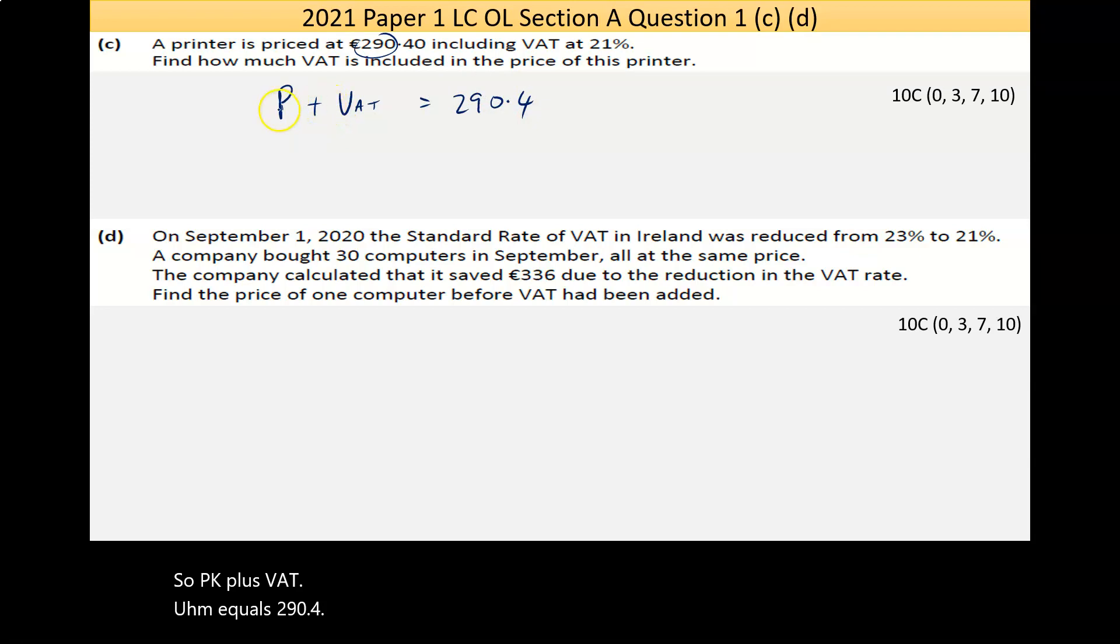Effectively that's saying the printer plus the 21 percent is equal to 290.4. We're looking for what P is. The 21 percent, you can calculate that: the printer plus the printer by 21 percent equals 290.4. That 21 percent is going to be the amount of VAT there is. We don't know what P is, but we know the total cost.